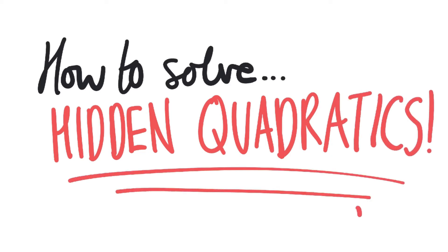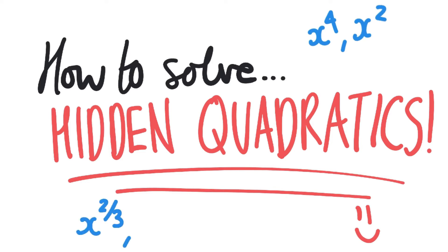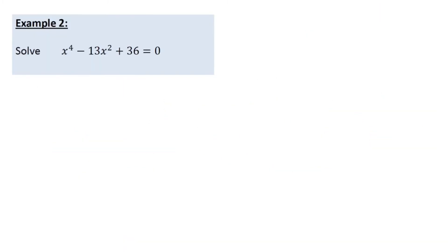For example, when you have polynomials of x to the power of 4 and x squared, or for example x to the power of two thirds and x to the power of one third. This is the first example I'm going to give you — it involves x to the power of 4 and x squared, which is the most common form of hidden quadratic you'll see.